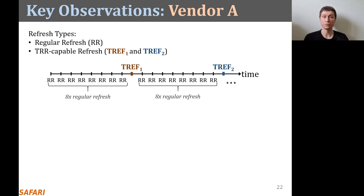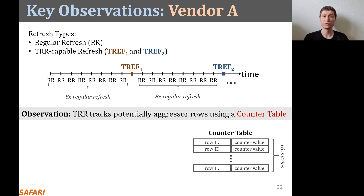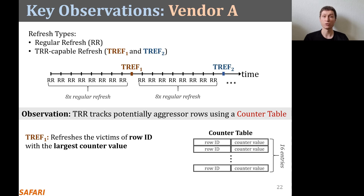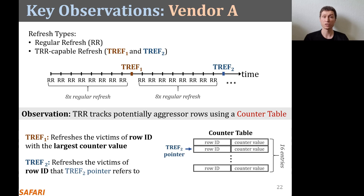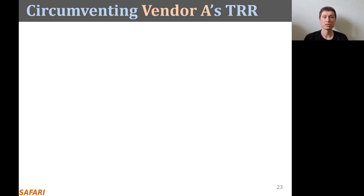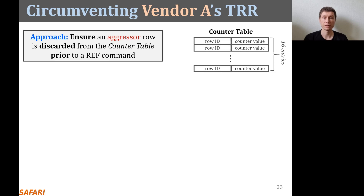We suspect that vendor A's TRR implements a counter table to keep track of repeatedly activated potential aggressor rows. The table has 16 entries, where each entry contains a row address and a counter value indicating the accumulated hammer count of the corresponding row. When performing TRF1, the TRR mechanism refreshes the neighbor rows of the row ID that corresponds to the largest counter value in the table. TRF2 uses a pointer that indicates a row ID from the table to refresh its neighbors, and after performing TRF2, the pointer advances to the next entry in the table in a circular manner.